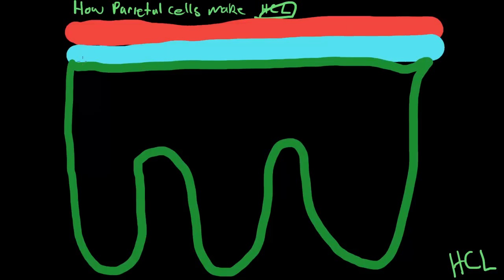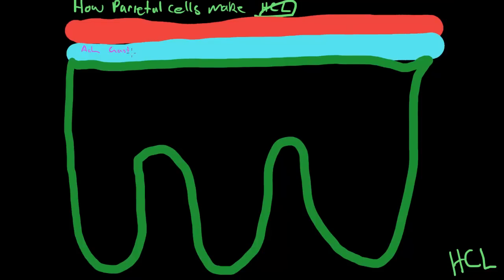So you may know that the main stimulants of acid production are acetylcholine, gastrin, and histamine.